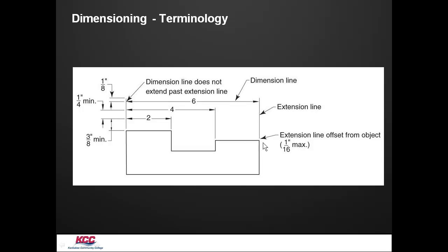By convention, we'll have a visible gap between the object and the extension line. Typically, that's noted to be about a sixteenth of an inch. We'll also extend our extension line past the dimension line by an eighth inch. You can see that's over here, an eighth inch extension of our extension line past the dimension line.